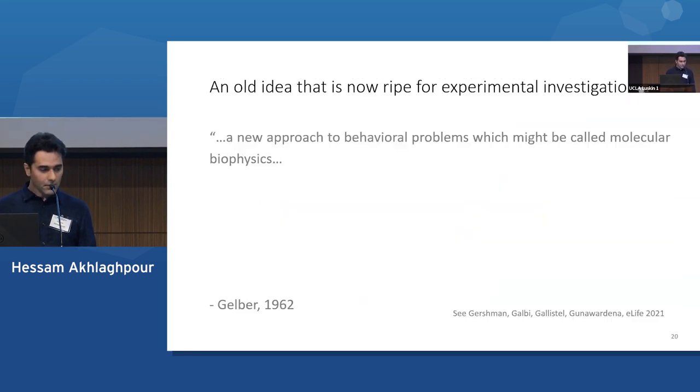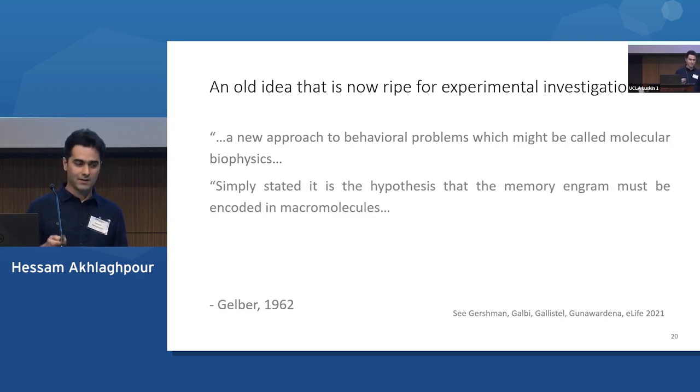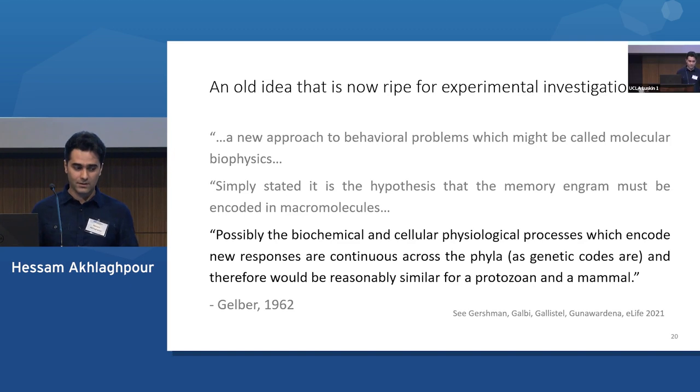So to wrap it up, I wanted to read this quote from Beatrice Gelber from back in the 1960s. So Beatrice Gelber was a cell biologist. She was working on single cell behavior. And she described her work as a new approach to behavioral problems, which might be called molecular biophysics. Simply stated, it's the hypothesis that the memory engram must be encoded in macromolecules. And she said, possibly, the biochemical and cellular physiological processes which encode new responses are continuous across the phyla, as genetic codes are. And therefore, would be reasonably similar for a protozoan and a mammal.